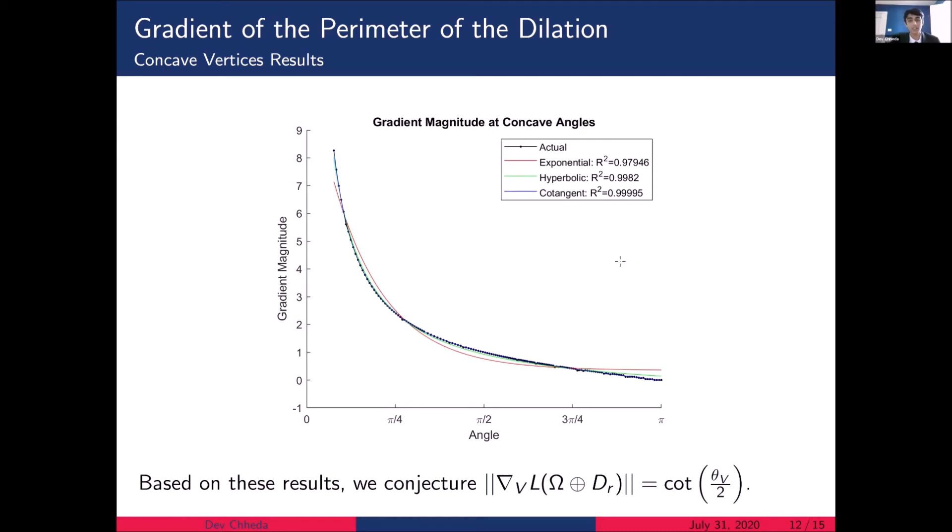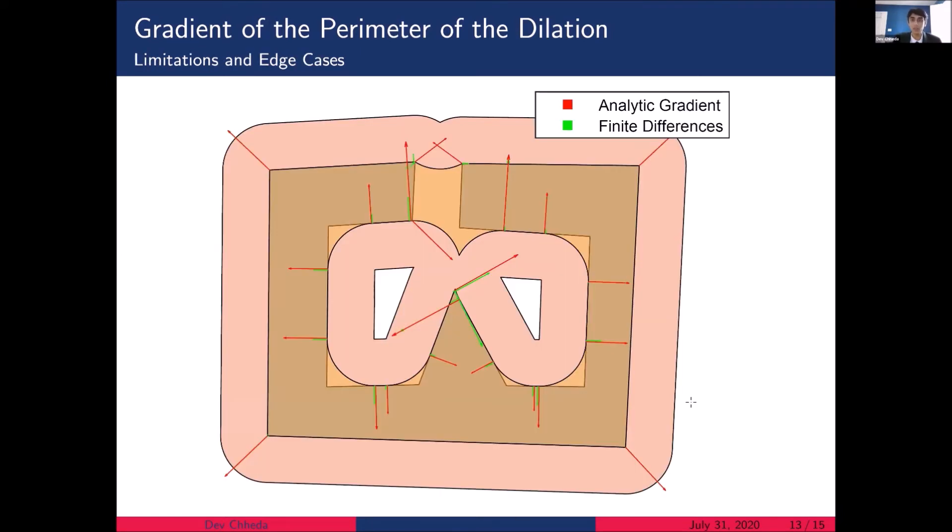However, despite this formulation working well for simple shapes, it does seem to fall apart for more complicated shapes. So here you'll see I've plotted in red the analytic gradient as computed using the formulations found above, and the finite differences gradient in green. And while they match for the most part, there are some discrepancies specifically here near this convex vertex. And we hypothesize that this is due to the fact that our morphological dilation has holes in it, but we're not sure how to account for this discrepancy.